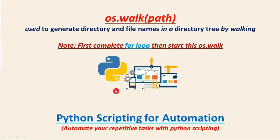Here we are going to work with os.walk. This walk is a method from the os module and it is used to generate directory and file names in a directory tree by walking.